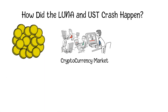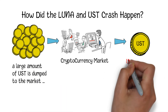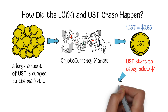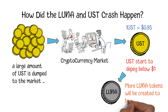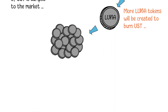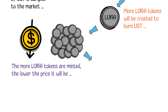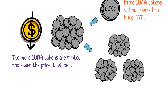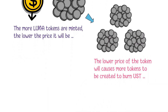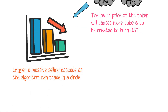However, if suddenly a large amount of UST is dumped to the market, the stablecoin will start to de-peg below one dollar. The algorithm will then create more LUNA tokens and burn UST in order to peg UST back to one dollar. When the UST value is further away from one dollar, even more LUNA tokens will be created. The more LUNA tokens are created, the lower the price will be. The lower price of the token causes even more tokens to be created to burn UST and defend its peg, creating a waterfall effect and triggering a massive selling cascade as the algorithm trades in a circle, making things worse and worse by creating trillions of tokens in a short time.